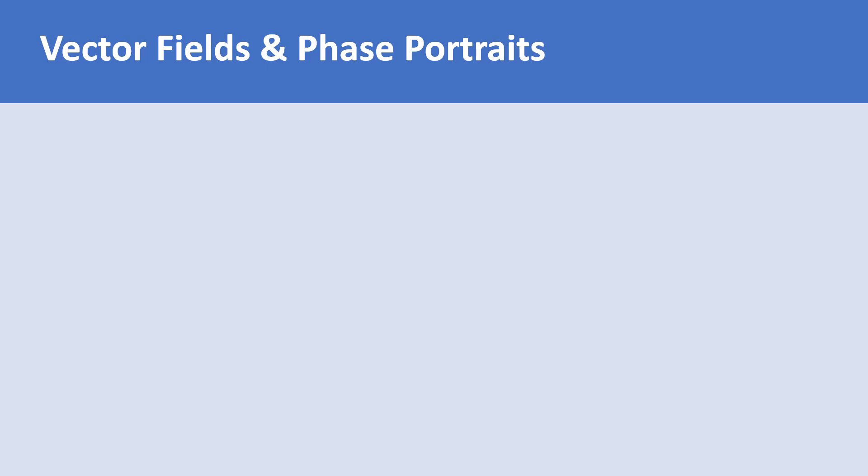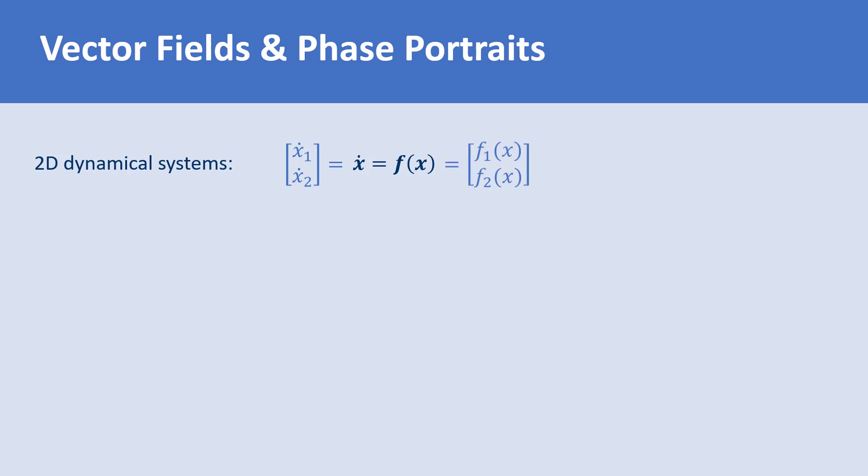Consider a two-dimensional time-invariant nonlinear system: x-dot equals f of x, where x is a two-dimensional state vector containing the state variables x1 and x2, and f is a vector that tells us how x changes.